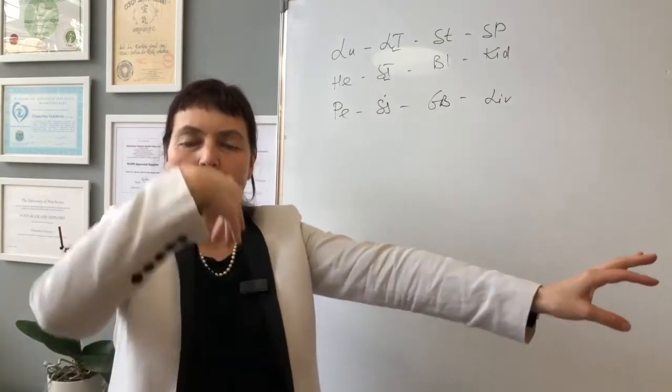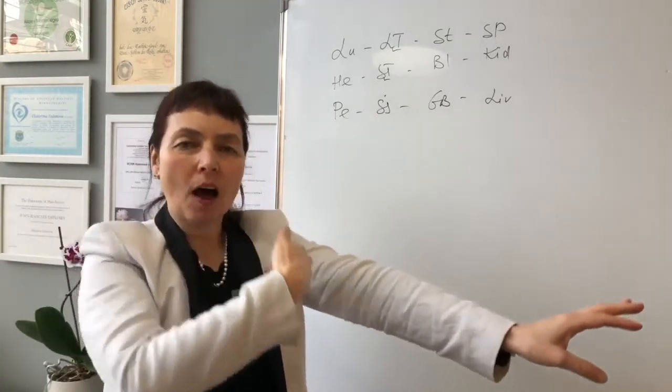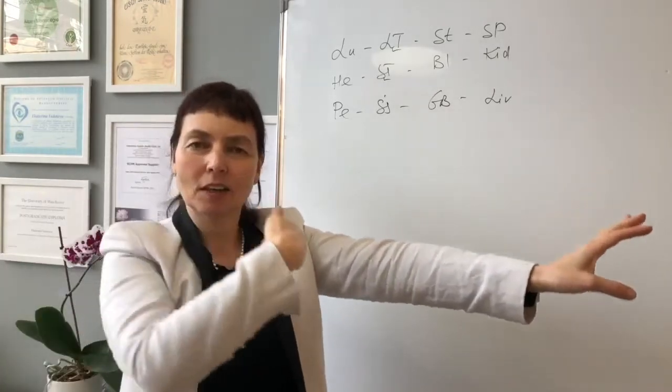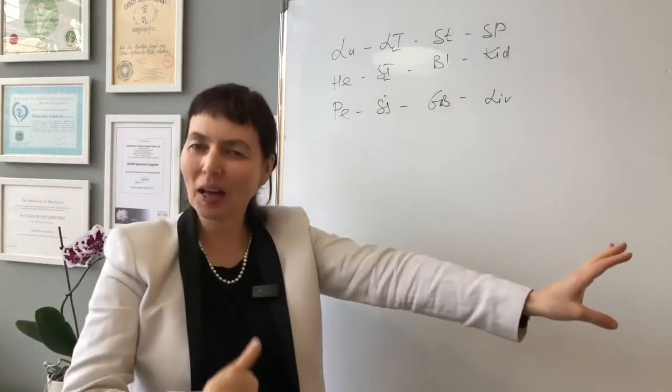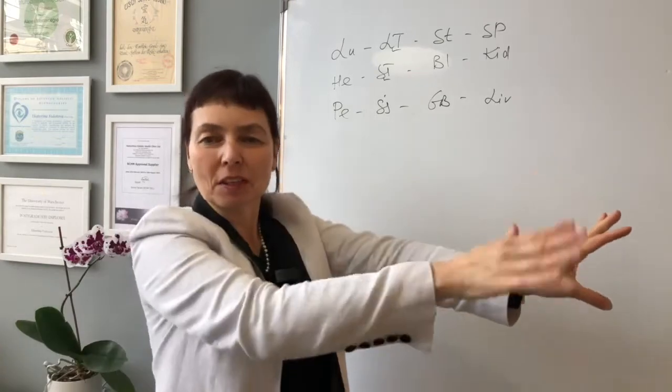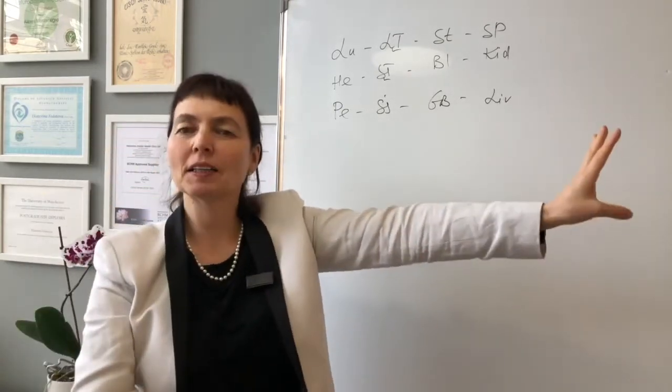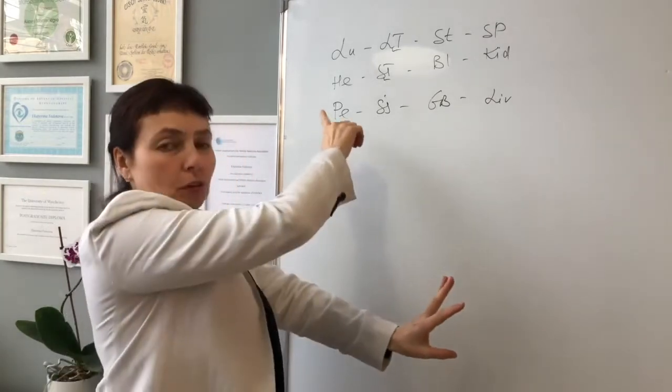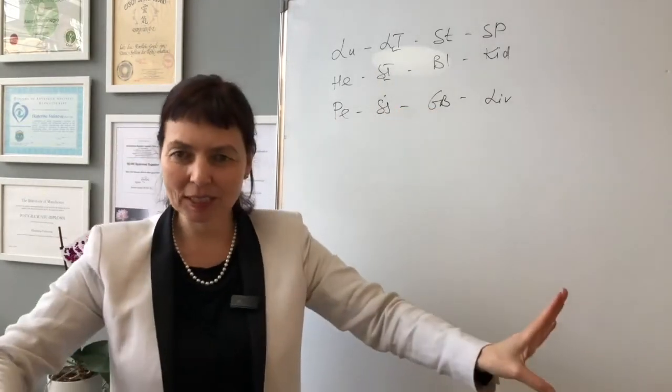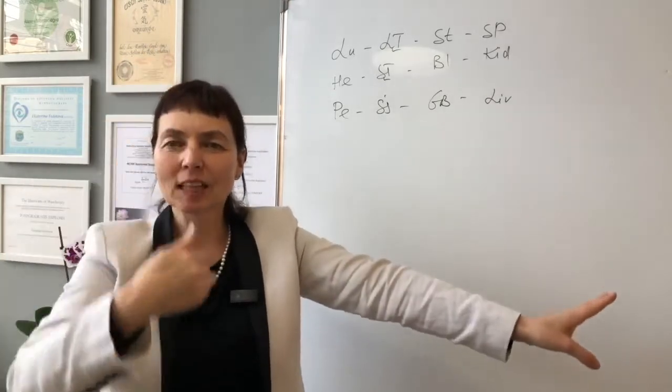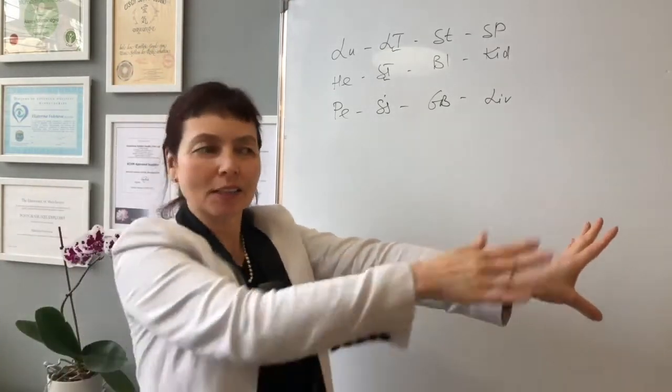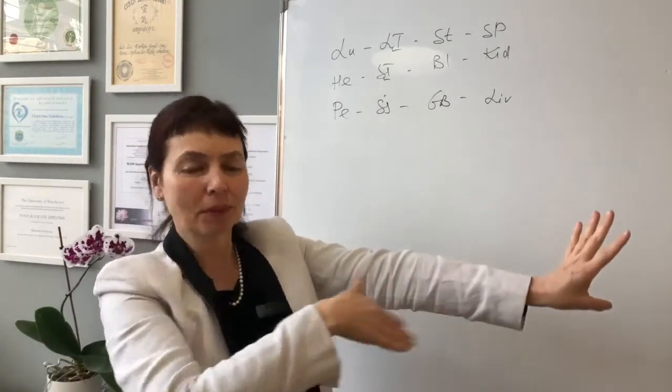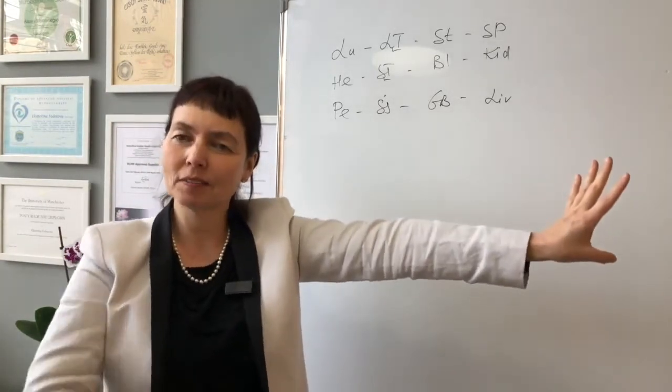And then you start: lung, large intestine, stomach, spleen, heart, small intestine, bladder, kidney, pericardium, triple heater, gallbladder, liver. Wonderful! So you follow this. Let's repeat it: lung, large intestine, stomach, spleen, heart, small intestine, bladder, kidney, pericardium, triple heater, gallbladder, liver. Well done!